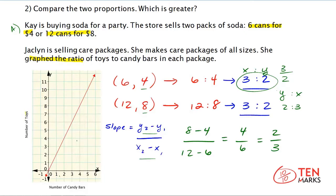So on the y axis, you see toys. And on the x axis, you see candy bars.